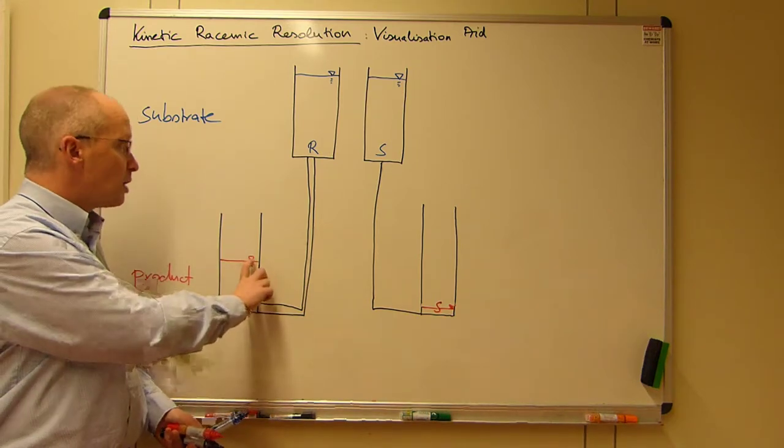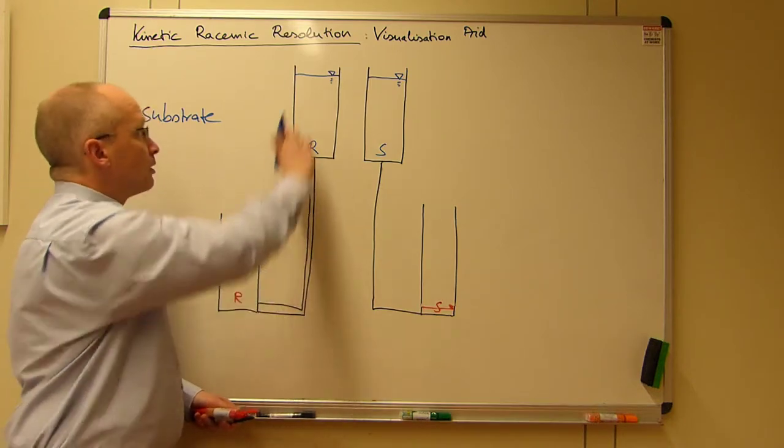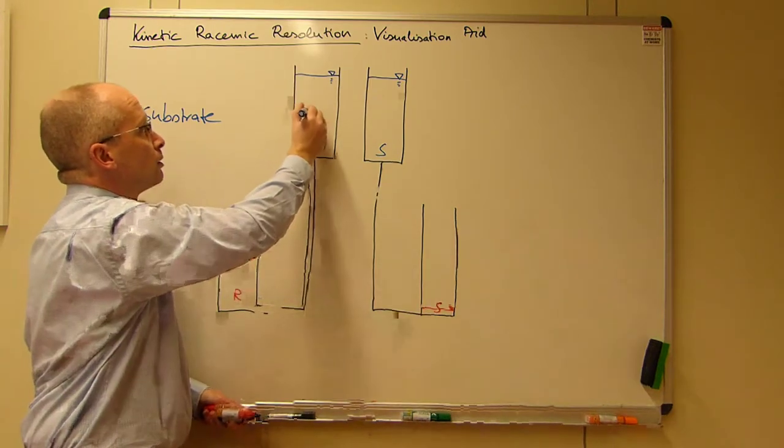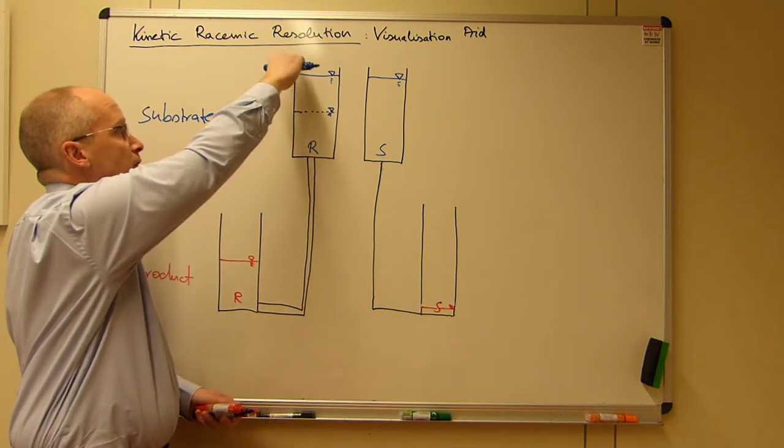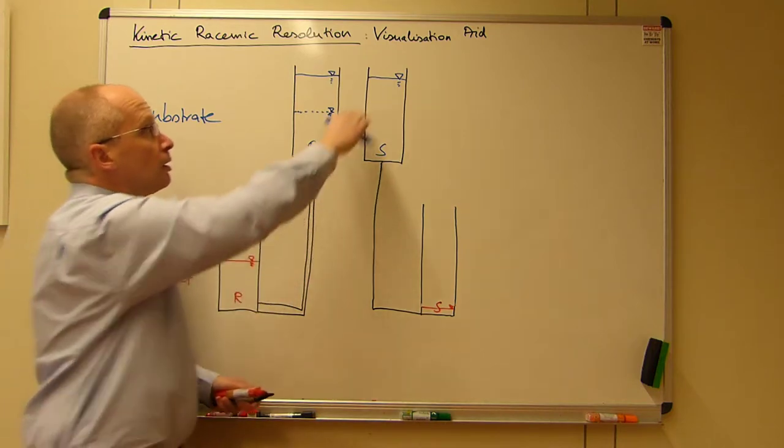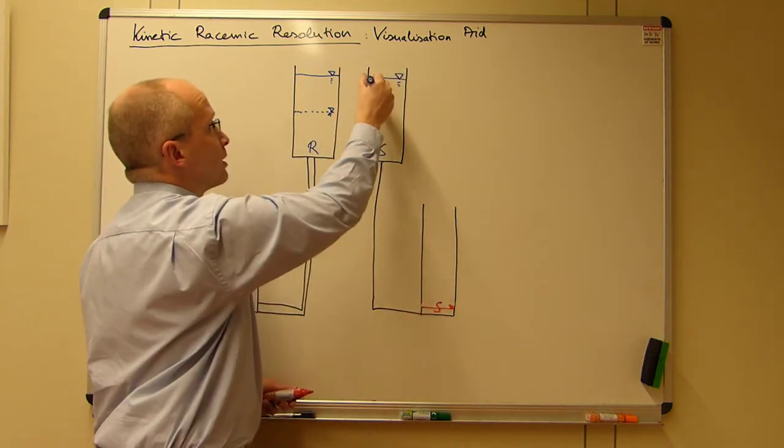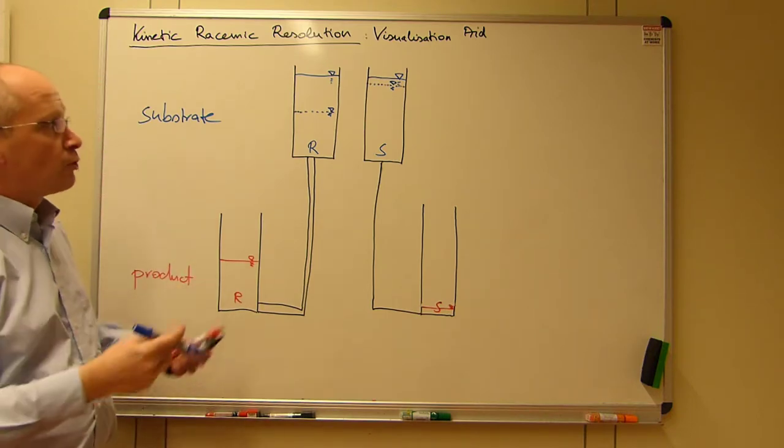And of course, this drainage here translates to a level here. That means that this actually empties, goes into this reservoir. This also empties, but only to a small extent.